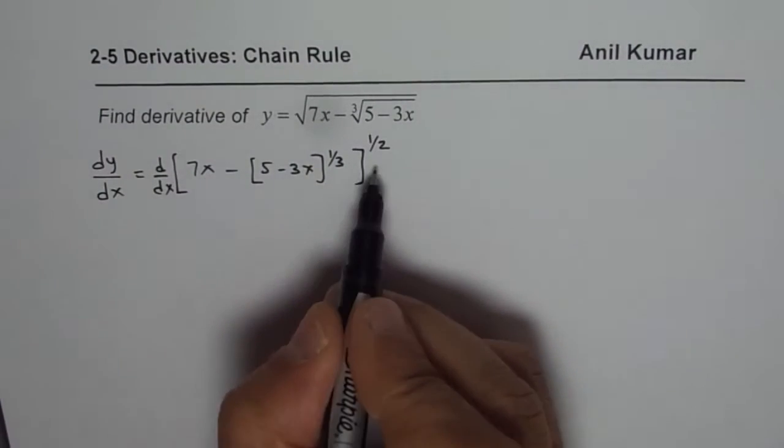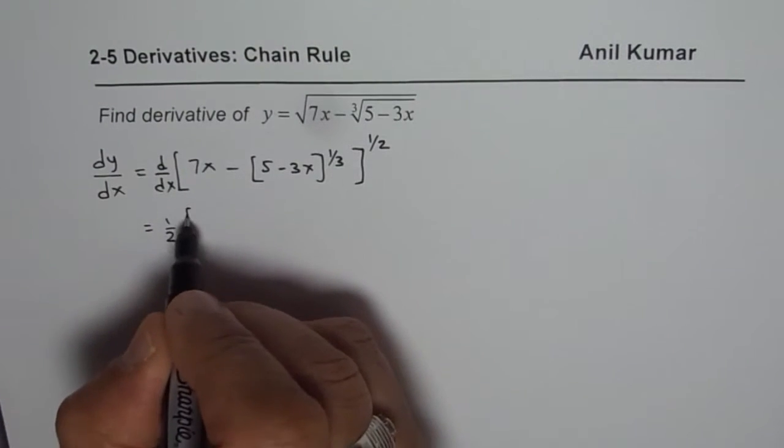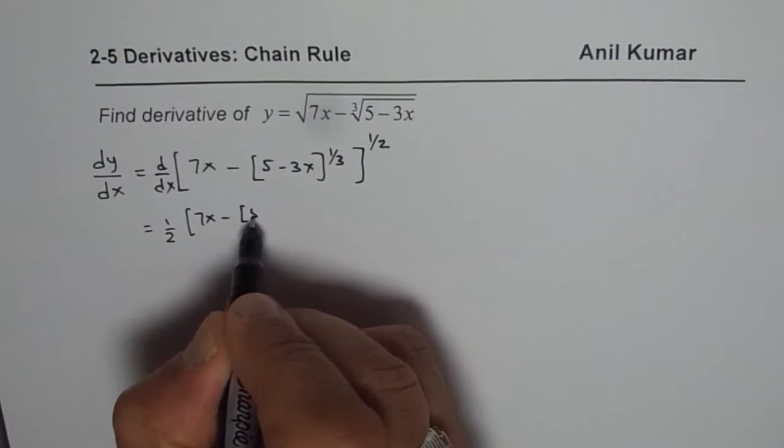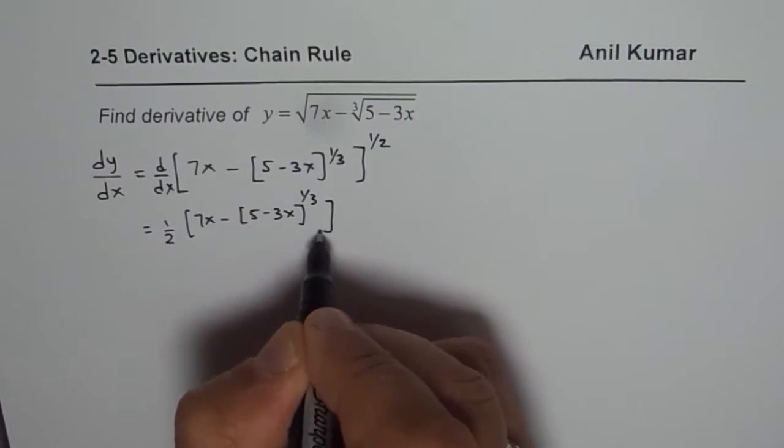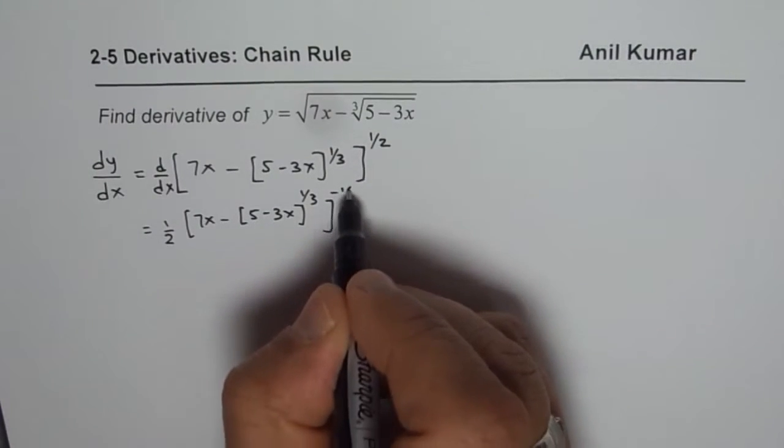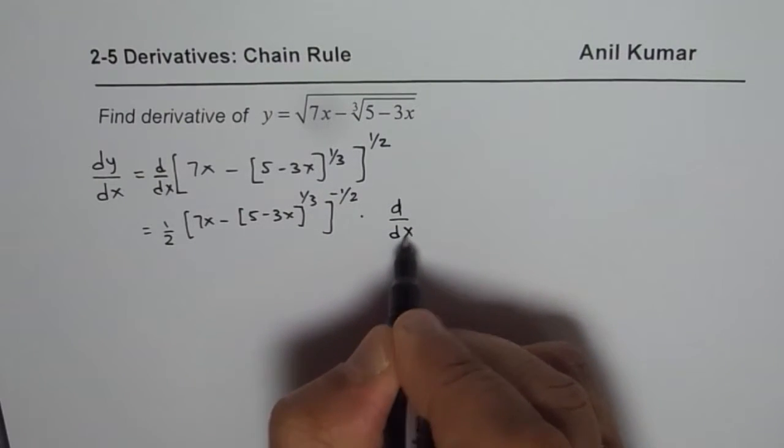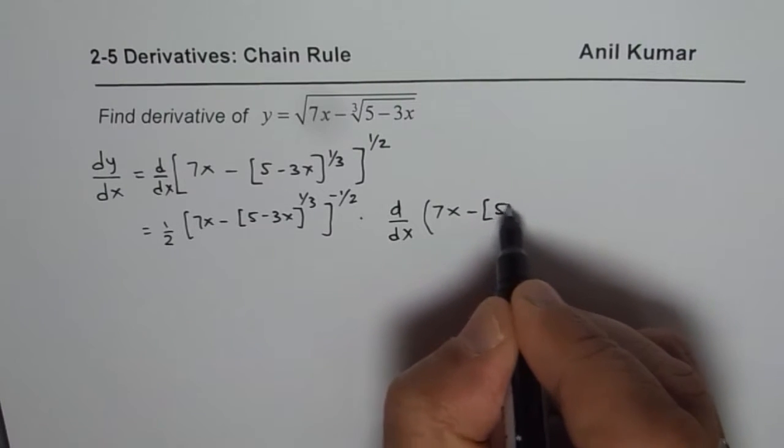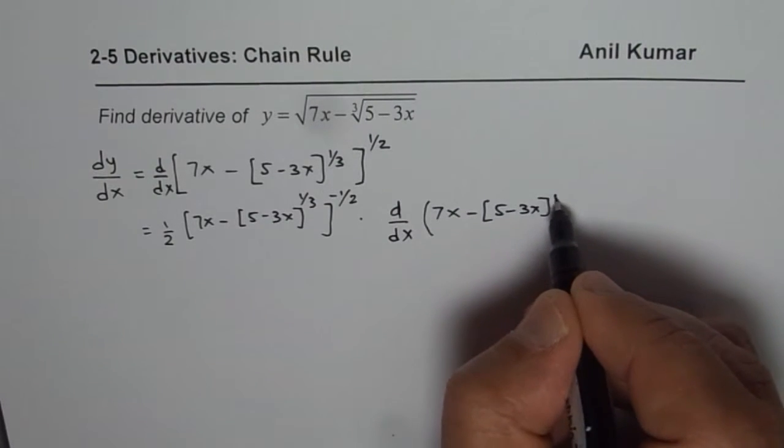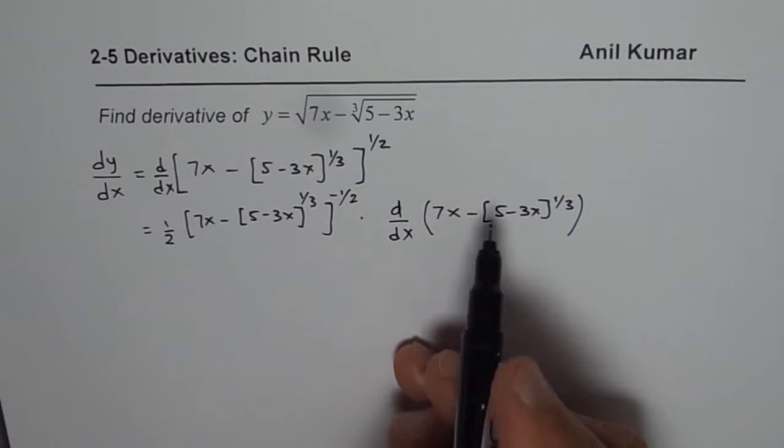So outside function is half times the whole function, which is [7x minus (5 minus 3x)^(1/3)]^(1/2) to the power of half minus 1, which is minus half times derivative of inside function, which is 7x minus (5 minus 3x)^(1/3). So that is how the chain rule works. You start with the outside function and move inside.